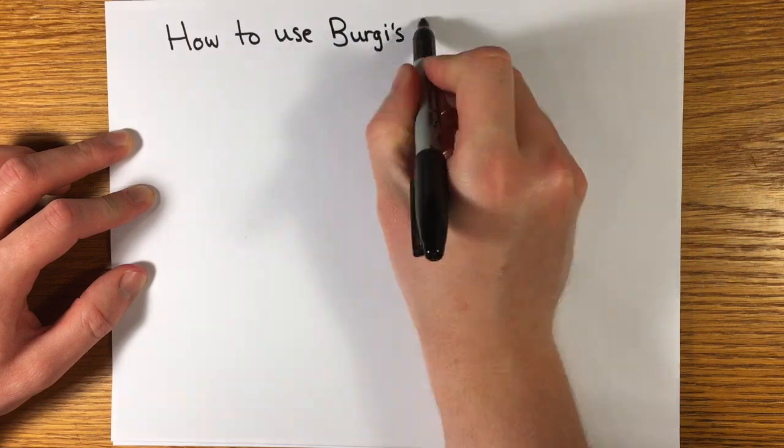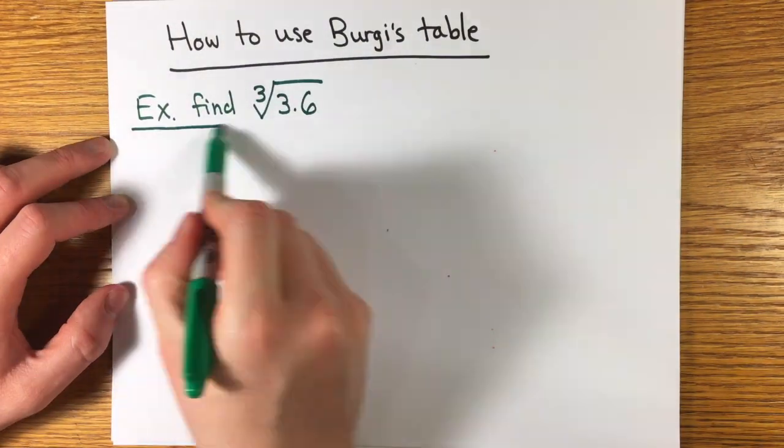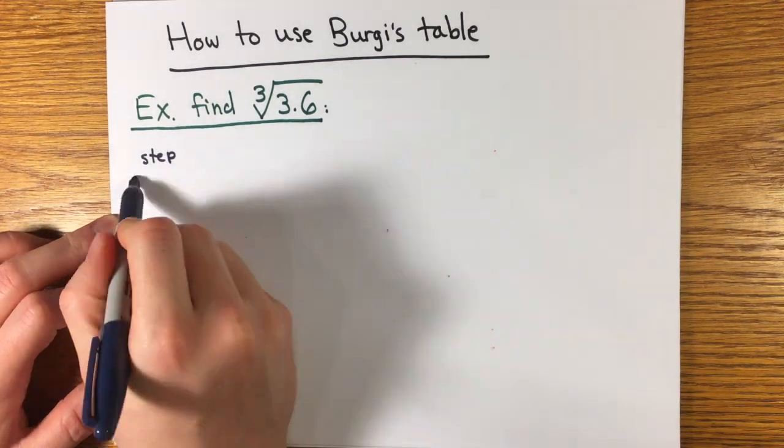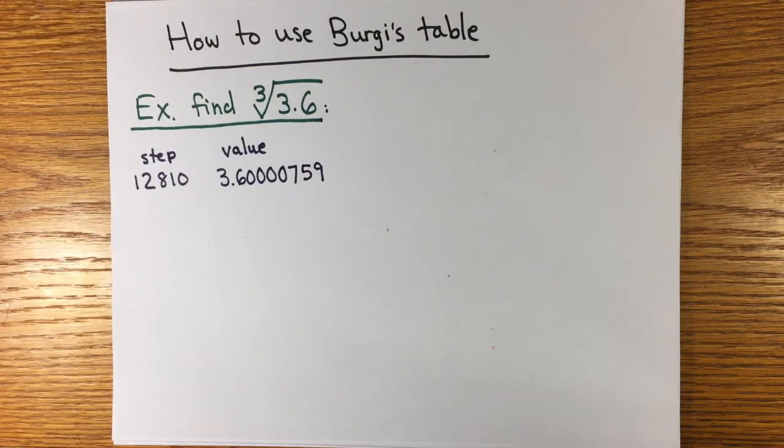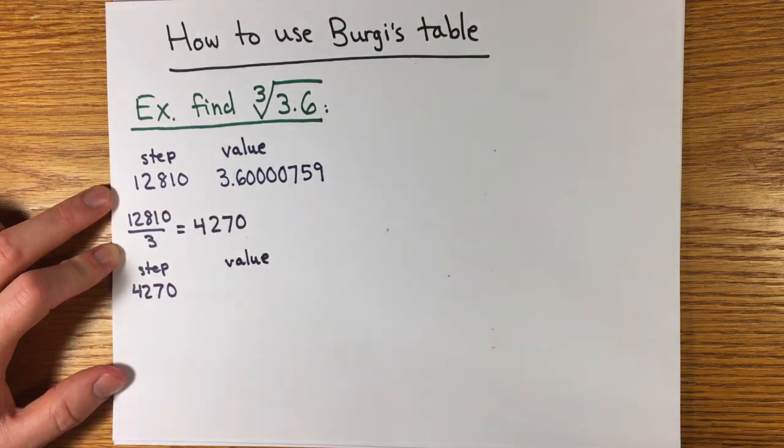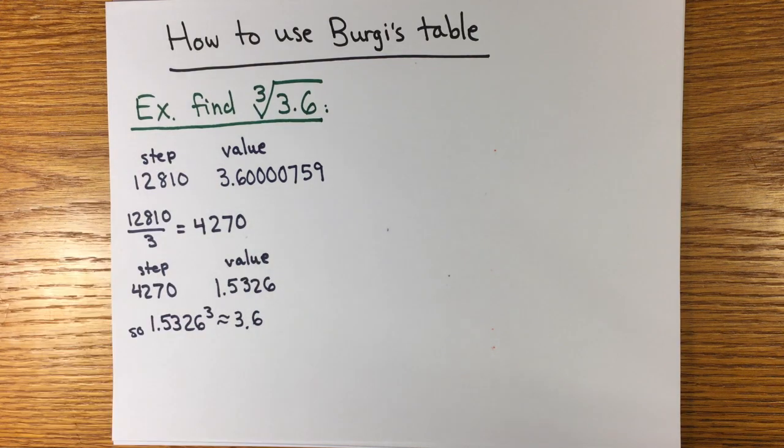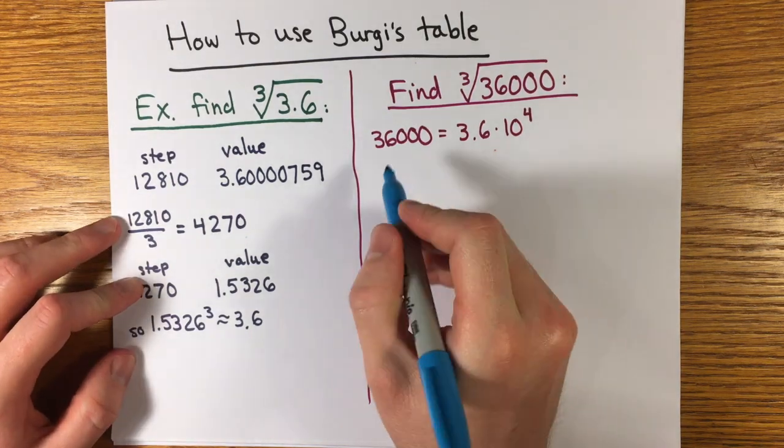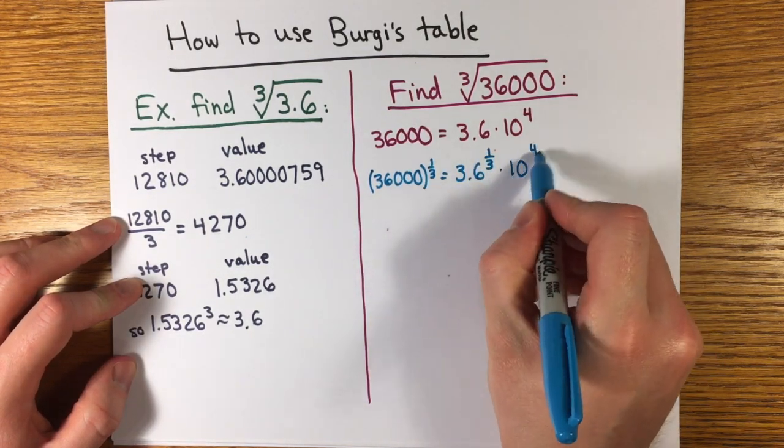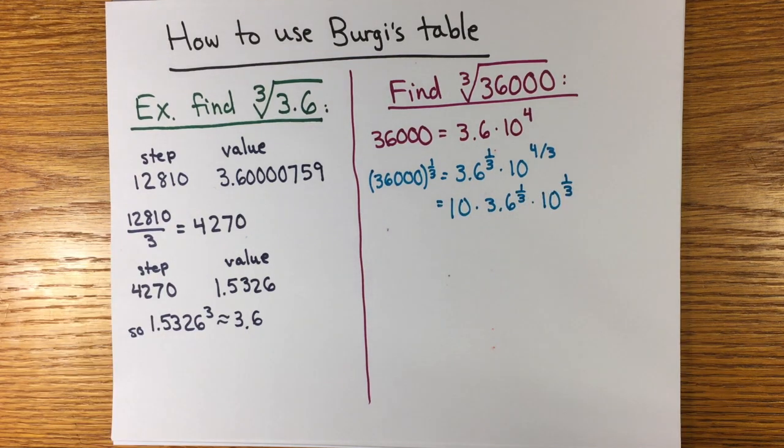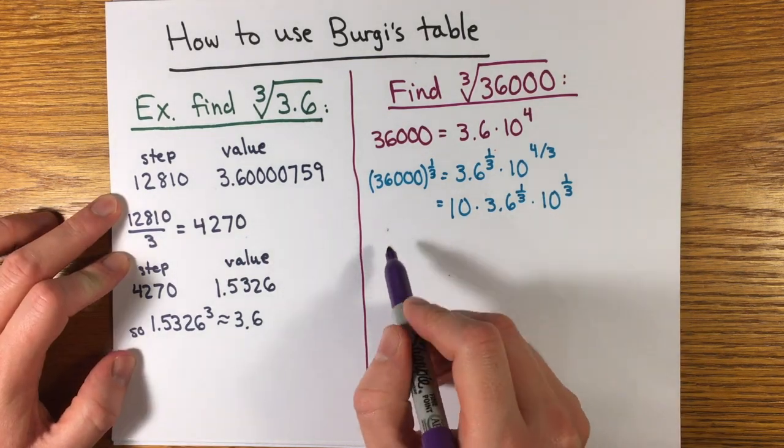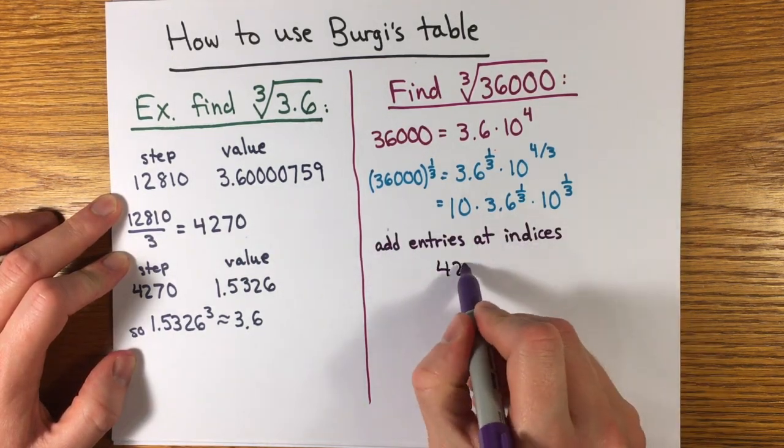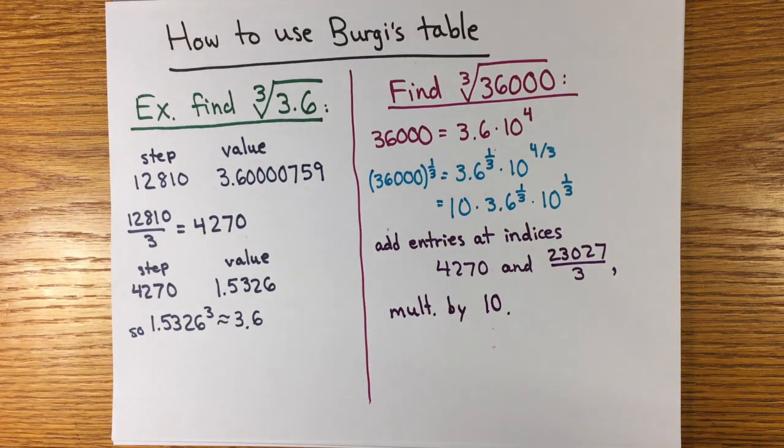Getting back to Burgi's four-digit table, here's how to use it. If you want to find, say, the cubed root of 3.6, you find the index of the entry closest to 3.6, which is 12,810, and the entry at 4,270, or one-third of 12,810, is very close to the root. If you want the cube root of 36,000, you have to adjust for powers of 10. 36,000 is 3.6 times 10 to the fourth. You can get 10 to the four-thirds as 10 times 10 to the one-third, so you take one-third of 23,027, add it to 4,270. That's between 11,945 and 11,946, giving 3.3017, so 33.017 cubed is about 36,000.